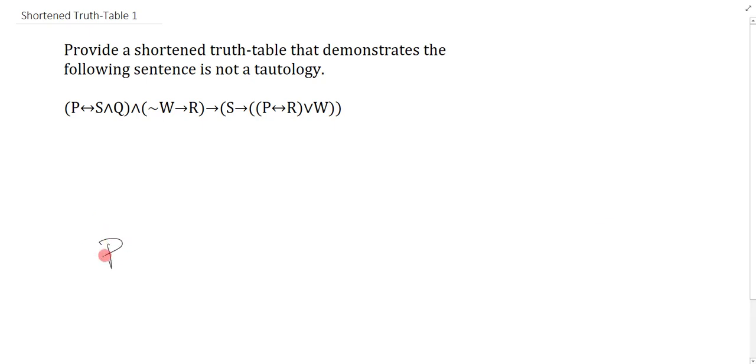So like all shortened truth tables, this is our desired solution P, Q, R, S, W. I just need to generate a single truth value assignment that demonstrates the property in question. That's what I want to deliver.